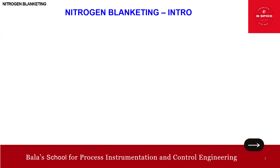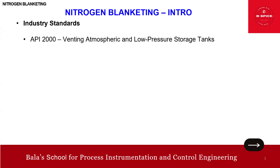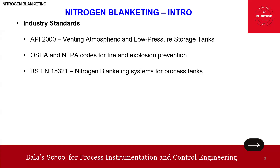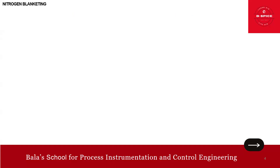Now we'll look at the industry standards. API 2000 relates to venting of atmospheric and low-pressure storage tanks. OSHA and NFPA cover fire and explosion prevention. In BSpice, we've also uploaded three videos on instrumentation codes and standards covering everything from A to Z. Additionally, BS EN 15321 is related to nitrogen blanketing systems for process tanks. These are the key standards relevant to this subject.